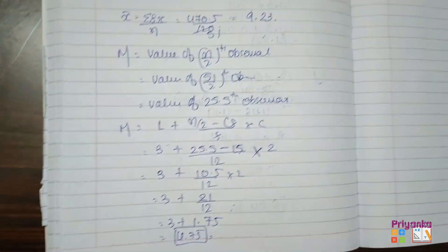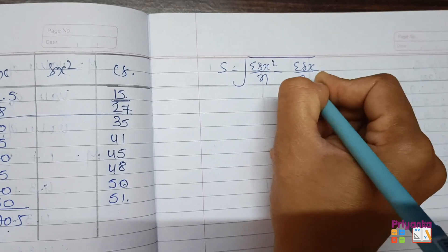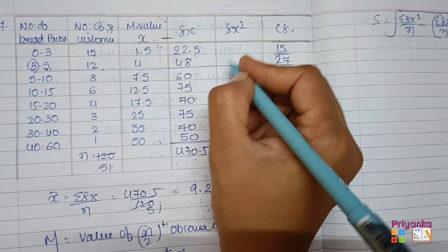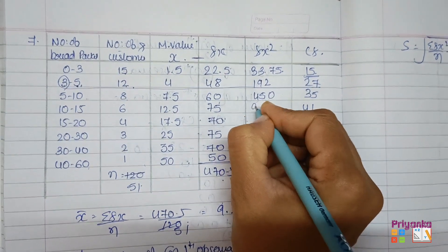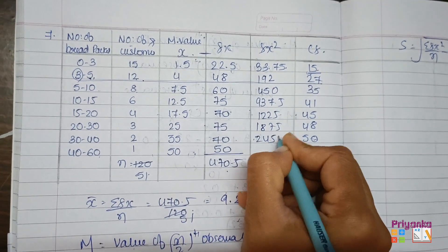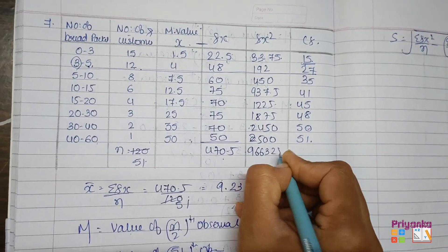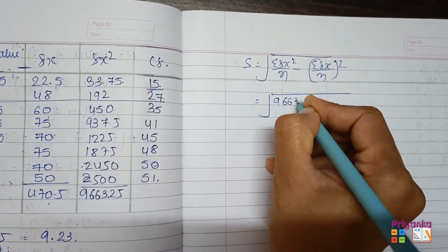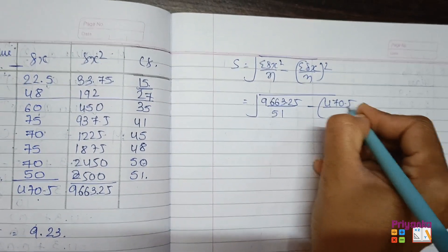Next we need standard deviation: σ = √(Σfx²/n − (Σfx/n)²). For this we multiply the x and fx columns to get fx² values: 33.75, 192, 450, 937.5, 1225, 1875, 2450, 2500, and 9663.25 as the total. Substituting: 9663.25 / 51 with (470.5/51)².